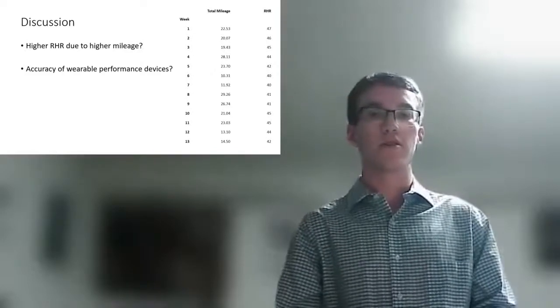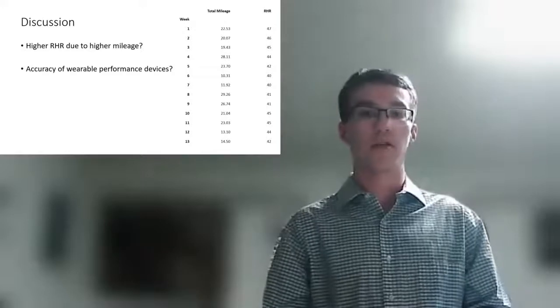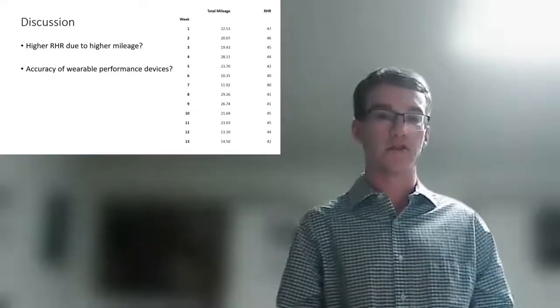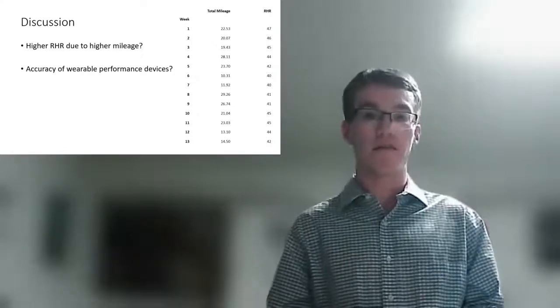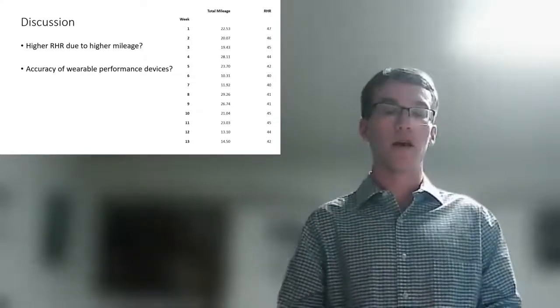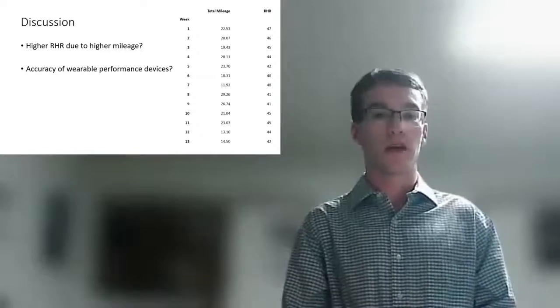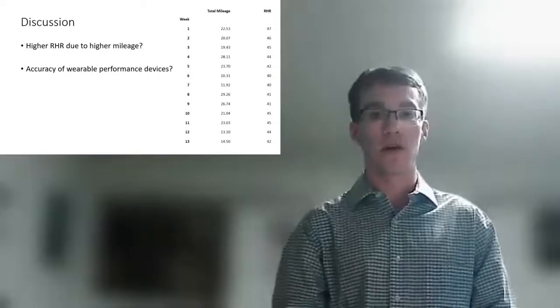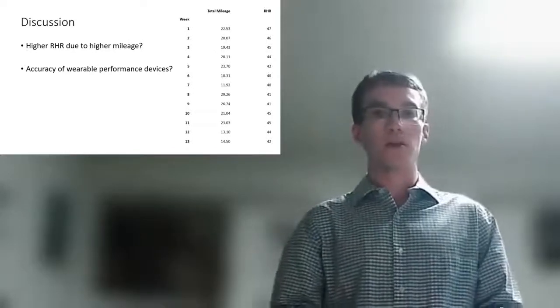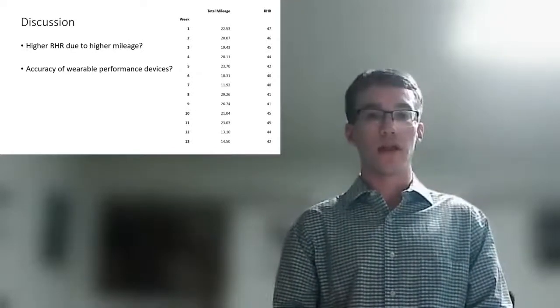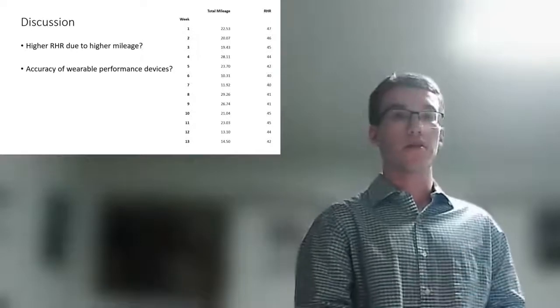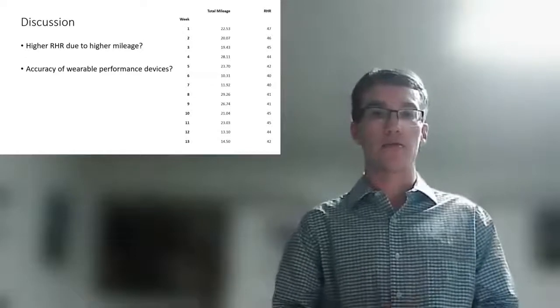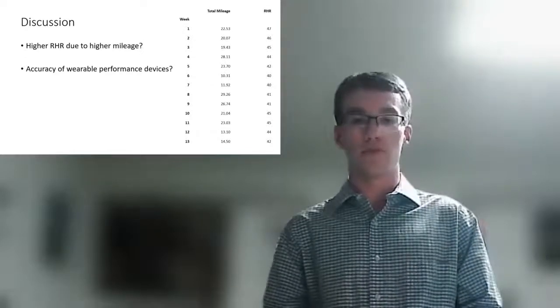But another interesting part of my research was that fluctuation that we saw in the VO2 max, where it doesn't just keep increasing as I become a better runner and a faster runner. We saw a little bit of fluctuation in the second half of my running plan. And some of the research that I found on the wearable technology, like on my wrist here, I have a Garmin running watch. Some of the research showed that the measurements of the different factors like VO2 max that wearable performance technology is able to measure are not always 100% accurate.